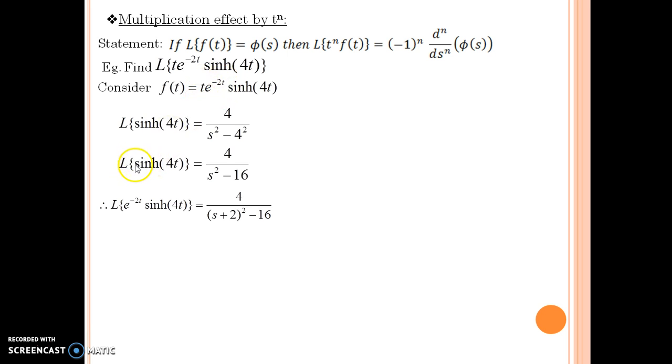First consider your function. When you find Laplace of sinh(4t), by the formula we are aware that it is 4/(s² - 4²), and when you simplify you get this. Then next I am going to take care of e^(-2t).